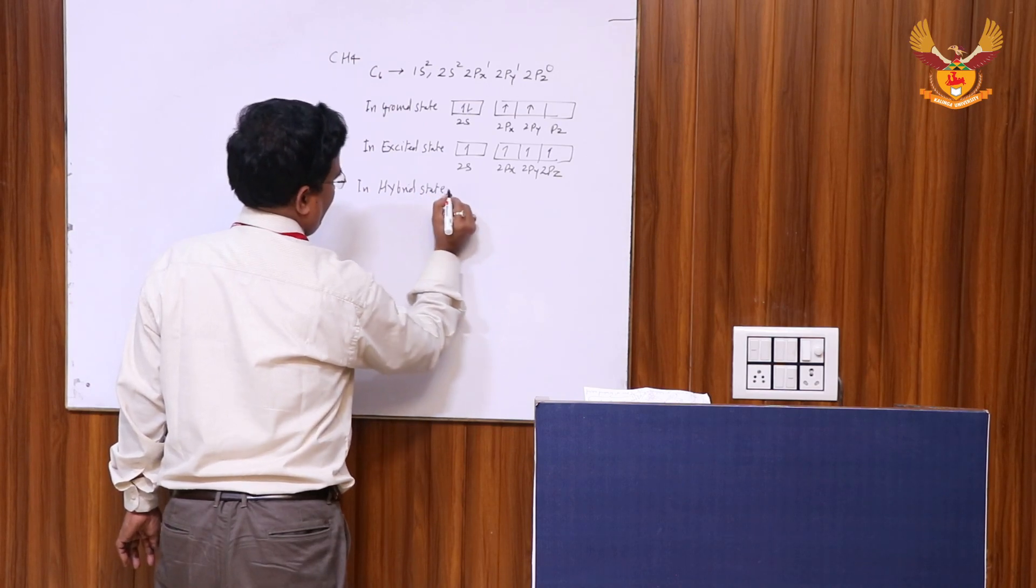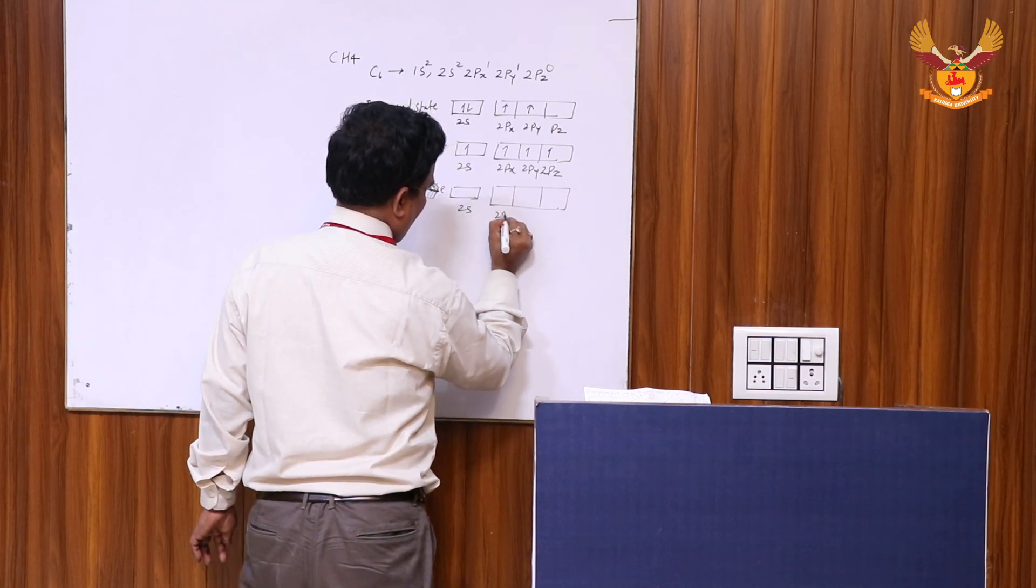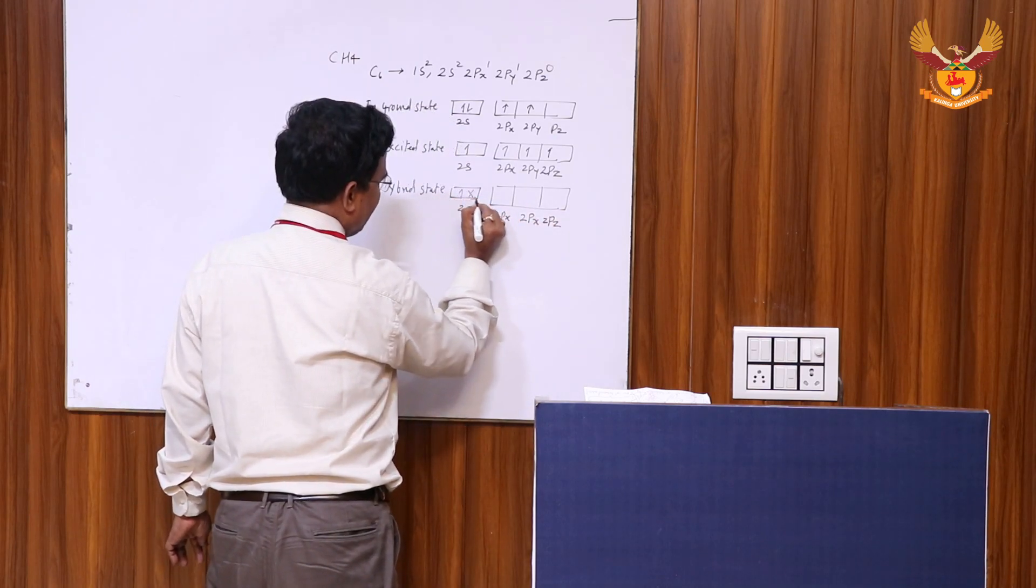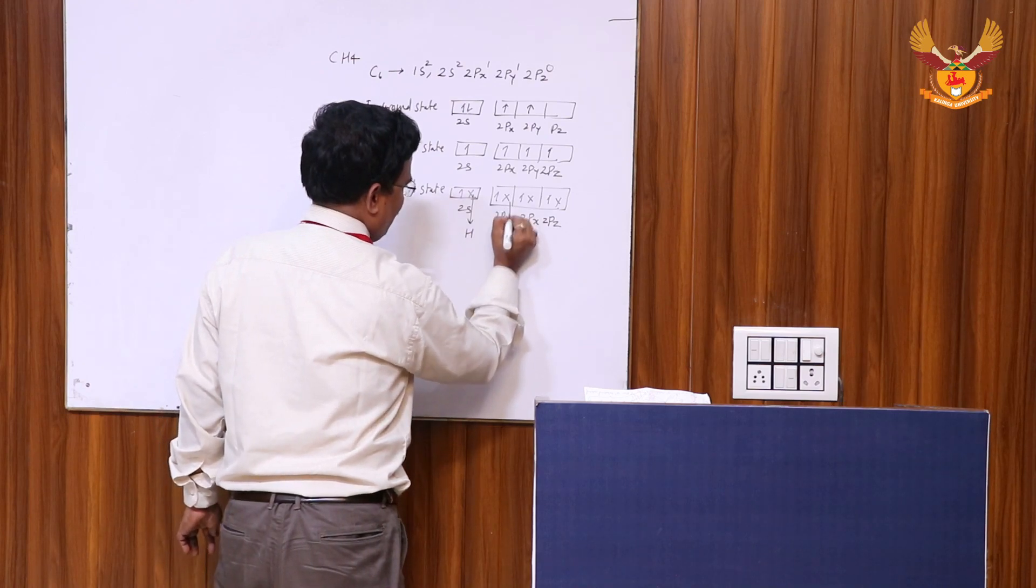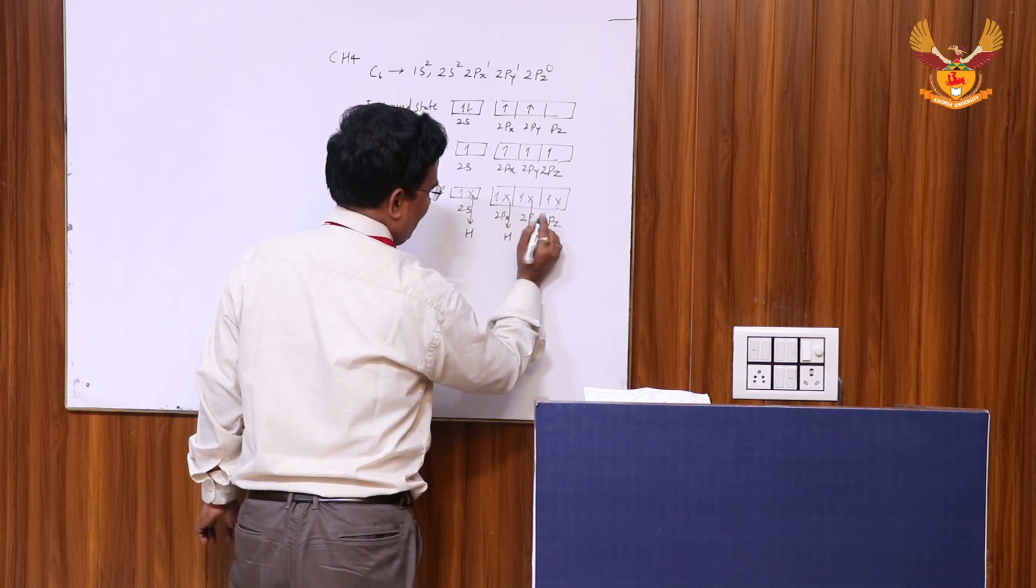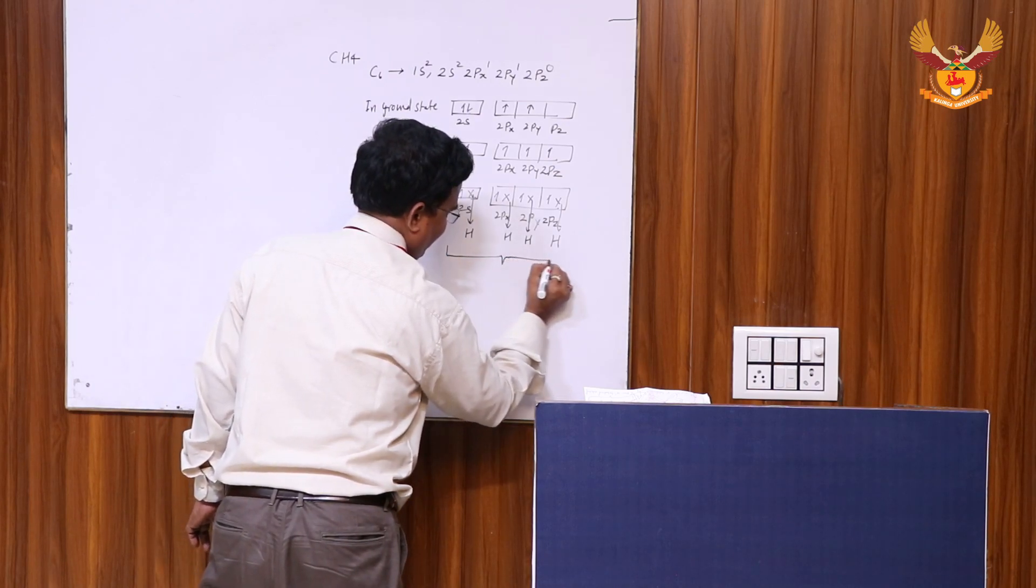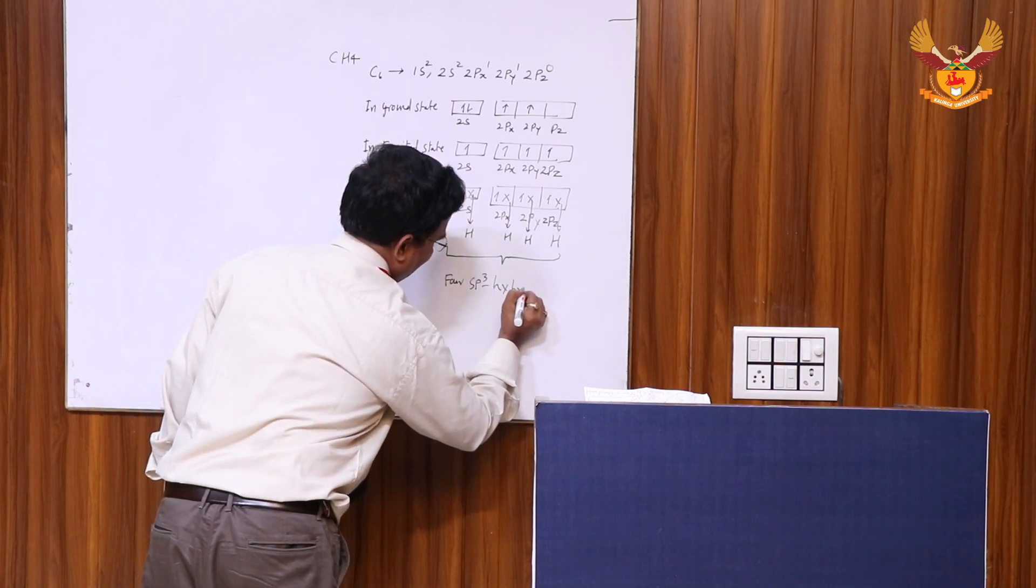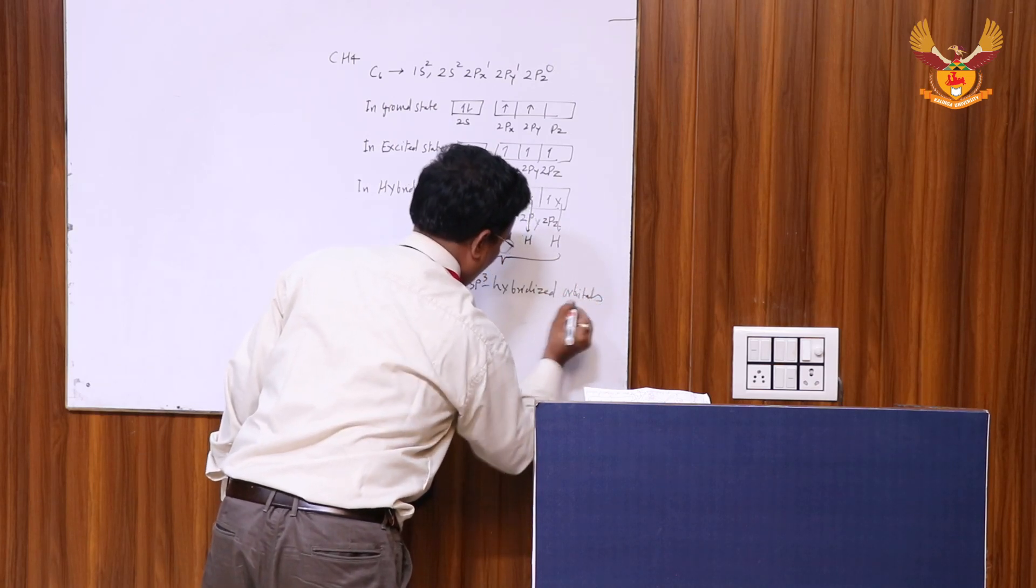In hybrid state, overlapping occurs between s orbital with p orbitals, with redistribution of electrons. One hydrogen atom shares here, one hydrogen atom in px orbital, second hydrogen atom in py orbital, and third hydrogen atom in pz orbital. Here, four sp3 hybridized orbitals are formed.